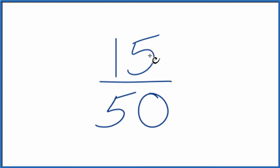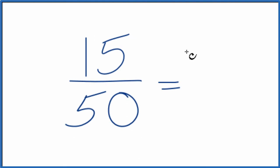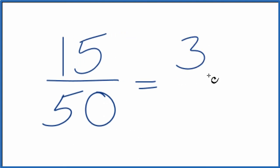I can see that 5 is going to go into 15 and 50 evenly. So let's just divide 15 by 5. 15 divided by 5 gives us 3. 50 divided by 5, that gives us 10. And we end up with simplifying 15 50ths down to 3 10ths.